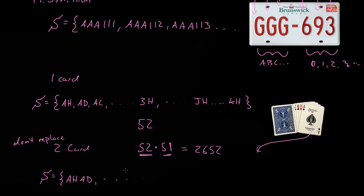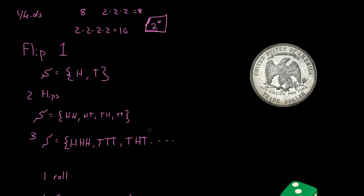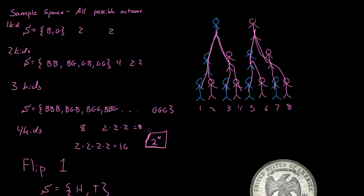And the same thing would be true if we did three cards. The sample space size would be 52 times 51 times 50 — that's a relatively large sample space size. So remember, sample space is just all the possible outcomes.